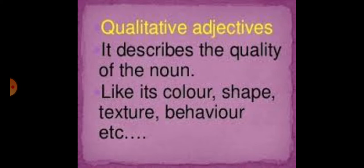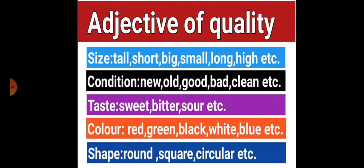Or wo quality kis kis tarah se ho sakti hai? Either in the form of color, shape, texture, or behavior. Theek hai, so is tarah se qualitative adjectives aap ko color, shape, texture, behavior - is tarah ki qualities kisi bhi noun ki batayenge. Let's take some more examples so that you may become clear in your head. See, the sizes of nouns, conditions, taste, color, and shapes of different things can be described by the adjective of quality. Aapke saamne misalein likhi hui hain, you can go through them right now.